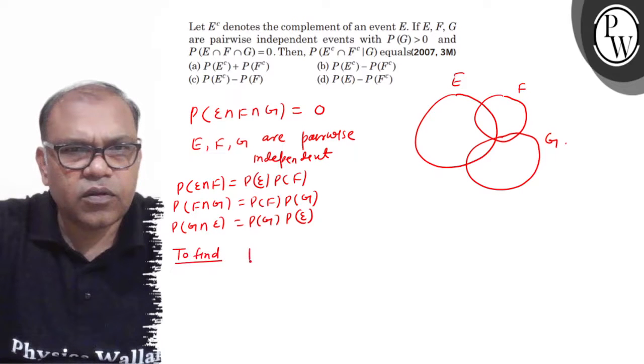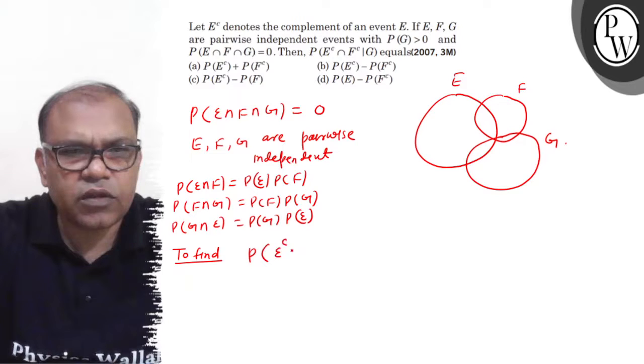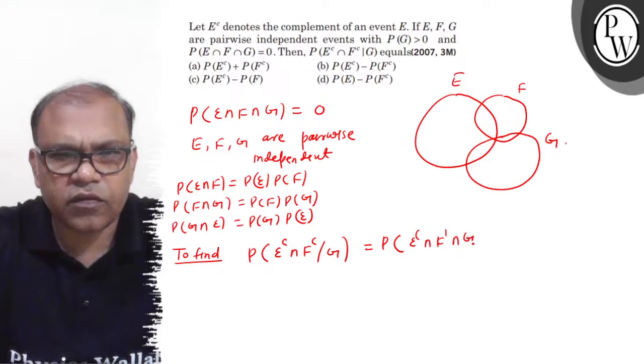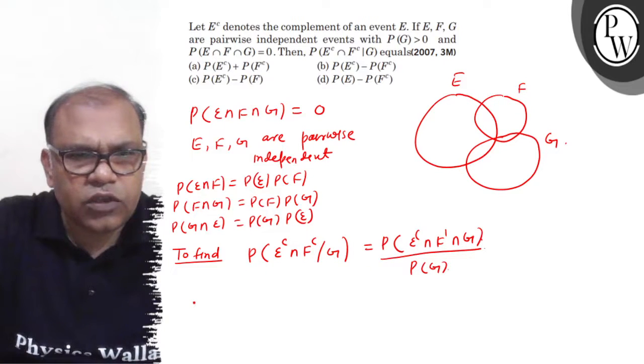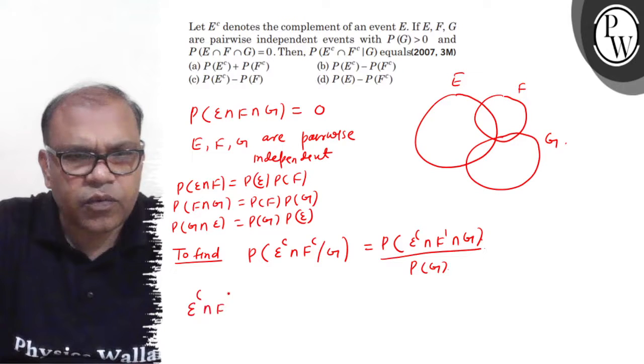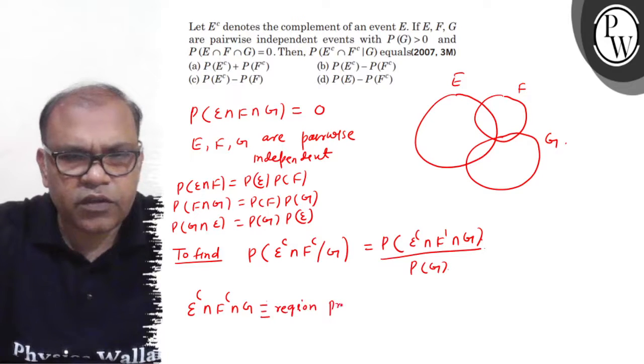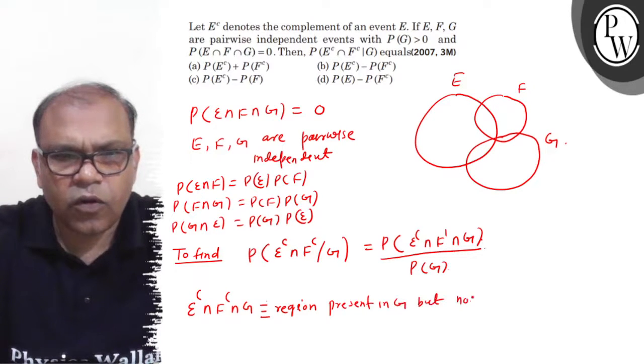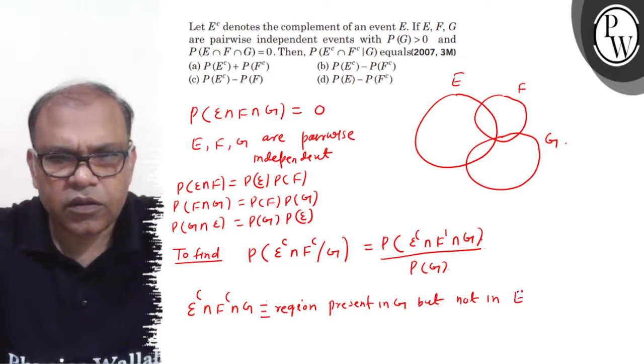So, to find P(E^c ∩ F^c | G), you can see P(E^c ∩ F ∩ G) divided by P(G). Now, E^c ∩ F ∩ G is the region present in G but not in E and F.